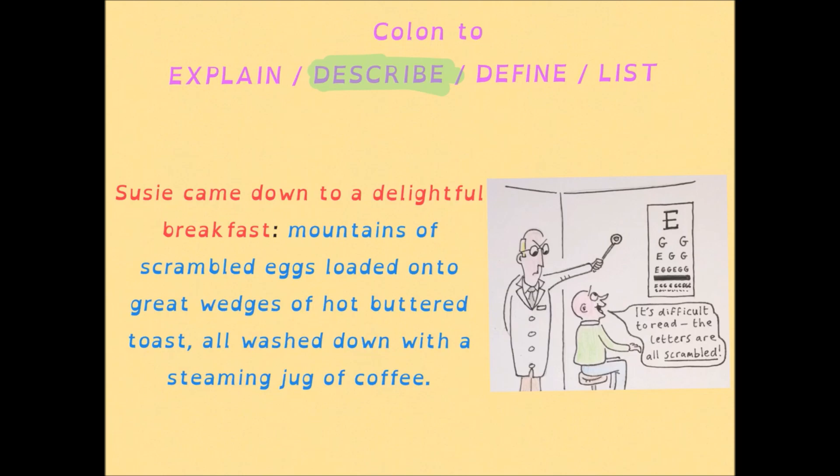Let's roll out another colon to kick off a description: 'Susie came down to a delightful breakfast: mountains of scrambled eggs loaded on great wedges of hot buttered toast, all washed down with a steamy jug of coffee.' So you've got a mouth-watering description of a heavenly meal — the breakfast she sat down to. Alternatively, you could call it an explanation — I'm explaining exactly what Susie's breakfast entailed. Either way, a colon is required.